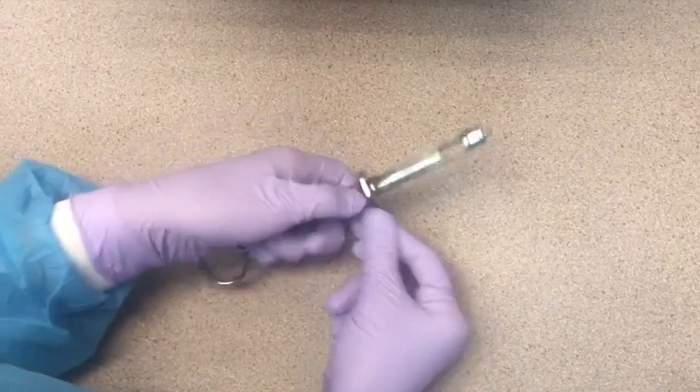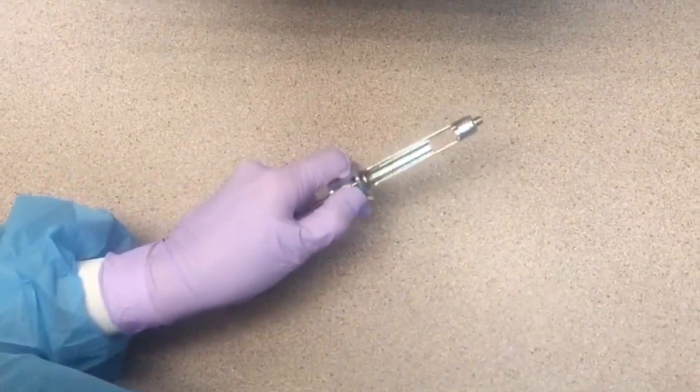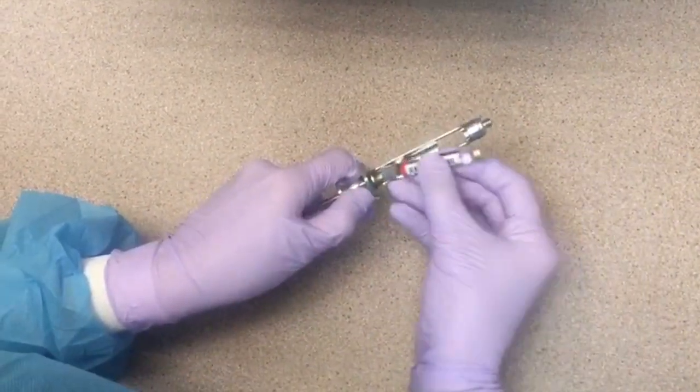Pull back on the thumb ring as far as it will go and insert the anesthetic cartridge plunger side down.